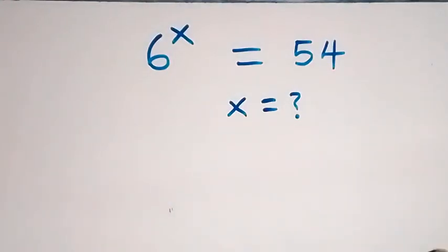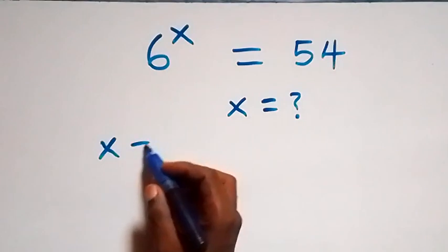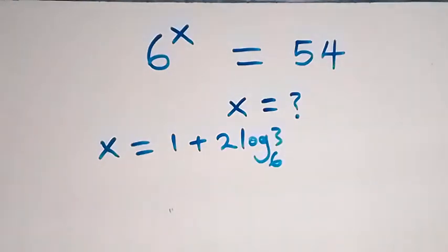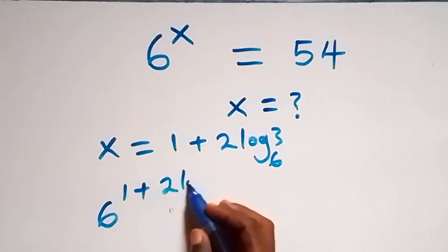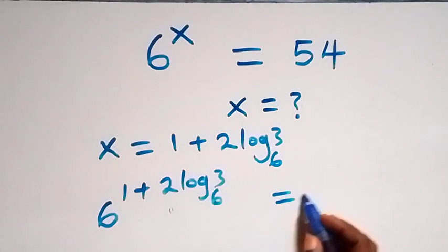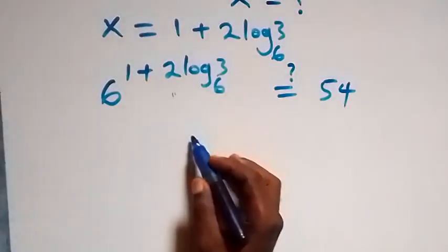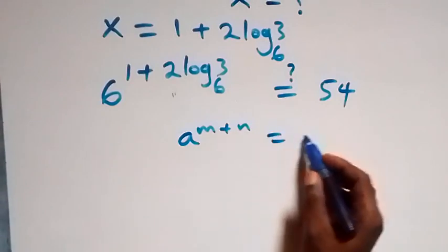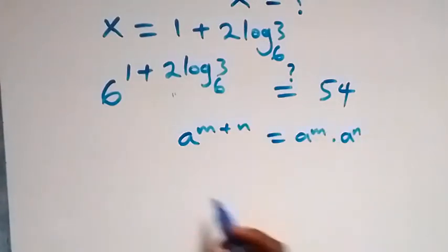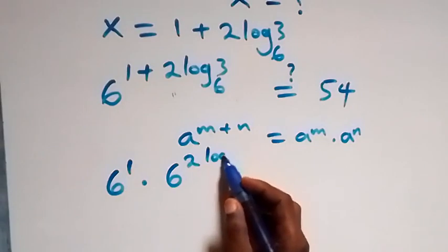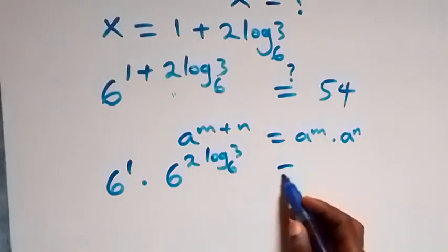To check if this satisfies the given problem, we substitute x equals to 1 plus 2 log 3 to base 6 back in. The equation becomes 6 raised to power (1 plus 2 log 3 to base 6) equals 54. Applying the law of indices — A raised to power (m plus n) equals A^m times A^n — this becomes 6 raised to power 1 times 6 raised to power 2 log 3 to base 6, equal to 54.